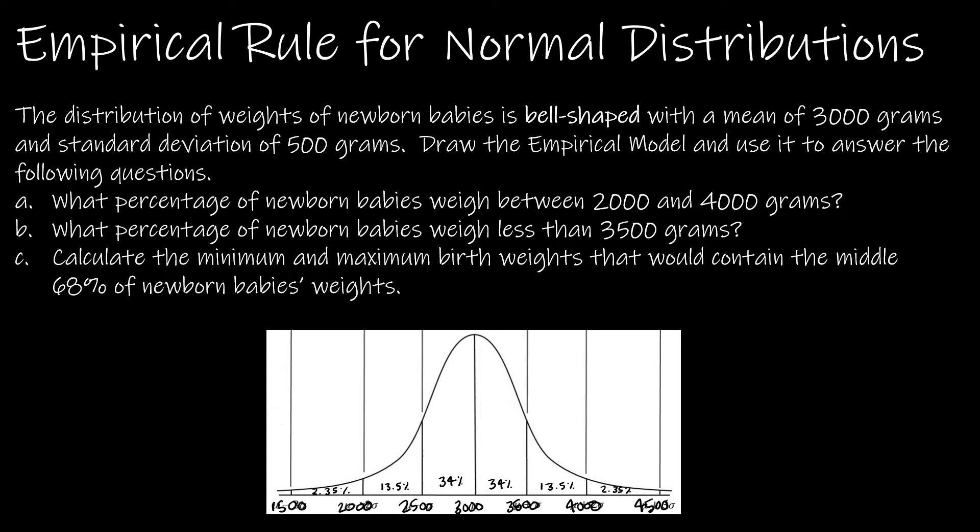So question A, what percentage of newborn babies weigh between 2000 and 4000 grams? Well, 2000 is right here at two standard deviations to the left. And 4000 is right here at two standard deviations to the right. And that means it's within this range of two to the left and two to the right. So on this one, I don't even have to do any math. The empirical rule says 95% of values fall within two standard deviations. So that means two to the left, two to the right. So that's my solution.